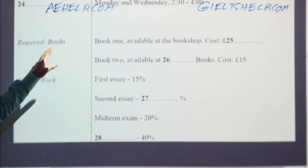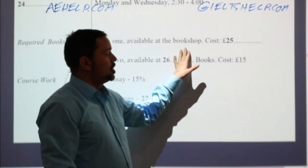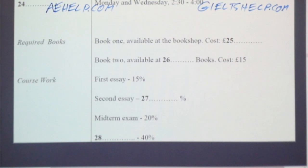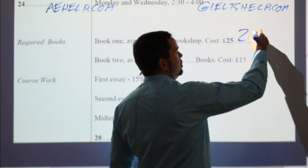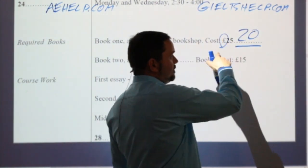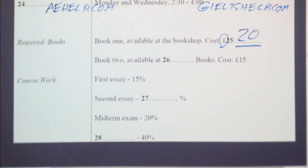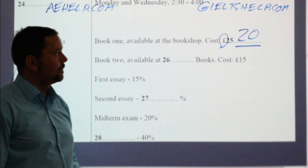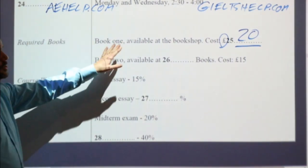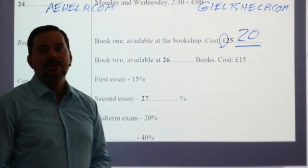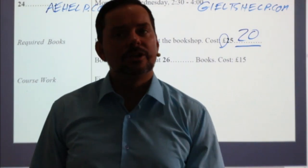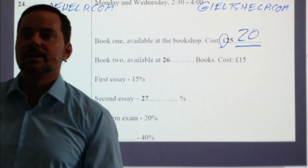The required books. Book one is available at the bookshop. Number 25 — how much does it cost? It's 20 pounds. So you only need the number 20 because you have the symbol for pounds. If you see the symbol, you do not need to write that into the answer. So just the number 20. Do the students have to buy the books? No, they don't — because they're in the library.